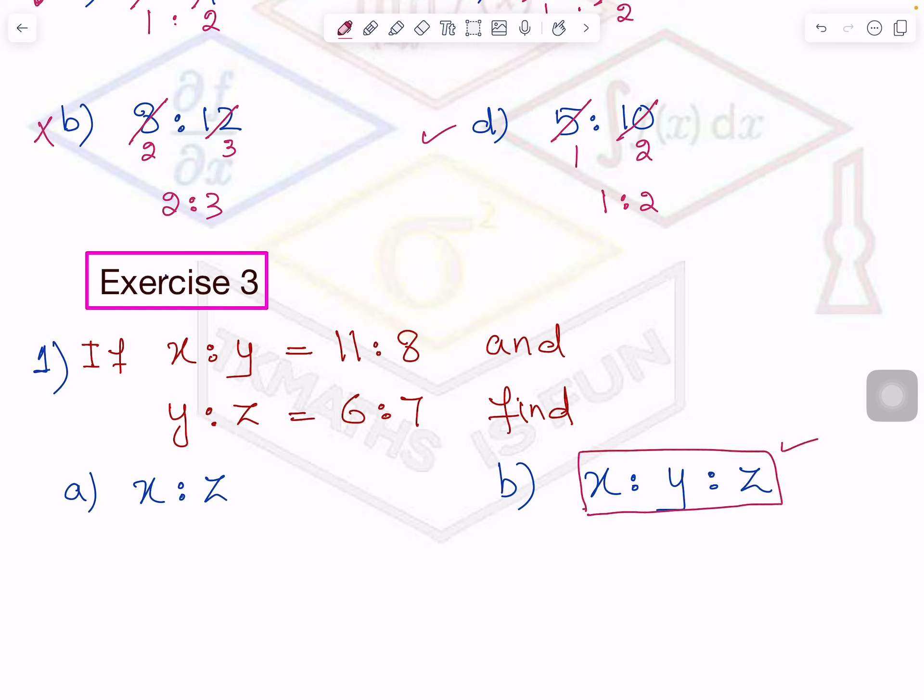Now when you have to give the ratio of this type, x is to y is to z, we will answer this question first and automatically we will get x is to z. So whatever ratios are coming at these two places will be my answer for here.